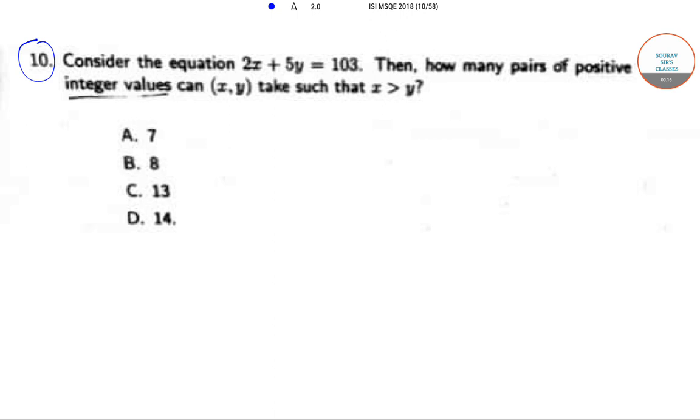In question number 10, we need to consider the equation 2x + 5y = 103. We need to find out how many pairs of positive integer values can x and y take such that x is greater than y. The options are 7, 8, 13, and 14.